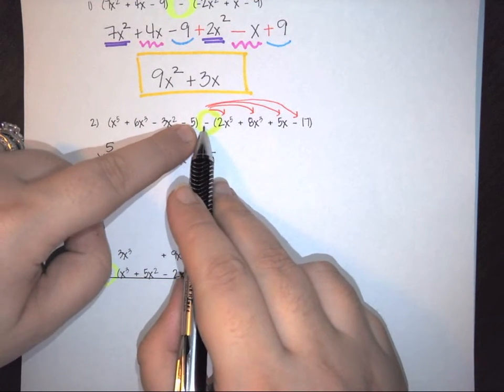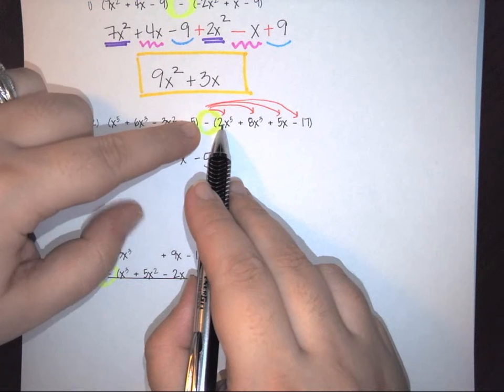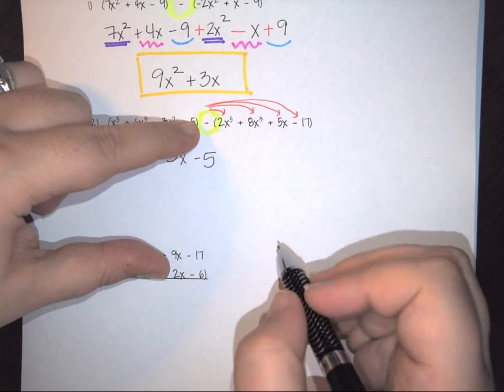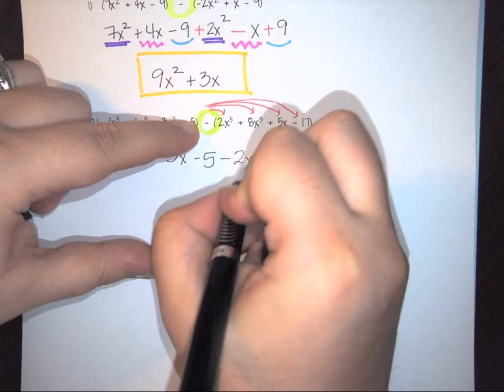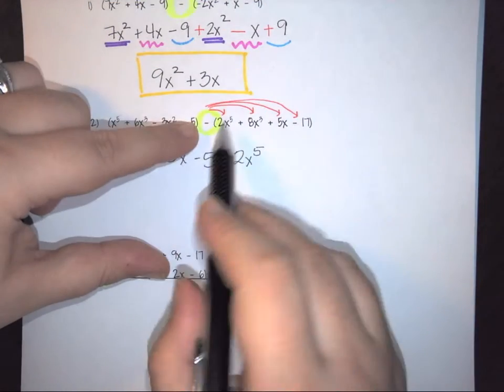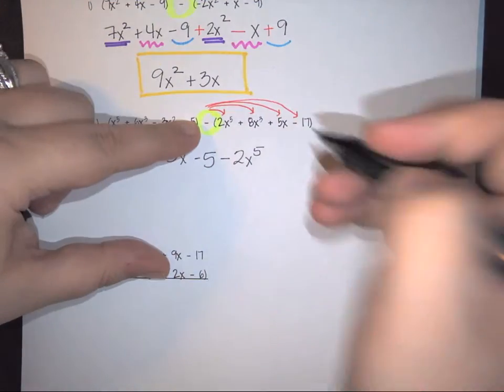And then again, I have negative and a positive. So that becomes a negative. So this is a negative 2x to the fifth. I have negative and positive. So again, this is a negative 8x cubed.